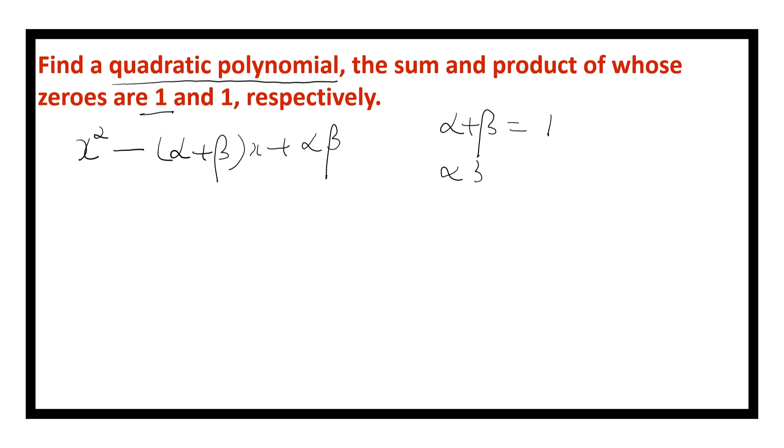Alpha into beta is product of zeros, that is equal to 1. So now let us substitute: x square minus alpha plus beta is 1, plus alpha into beta is what? 1. Here we need not put 1 coefficient, minus x plus 1 is the required polynomial.